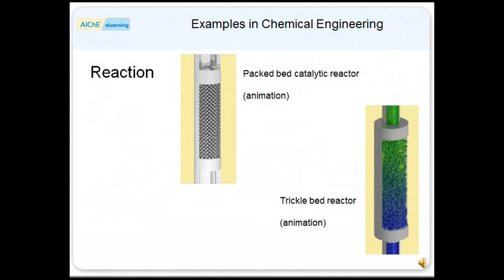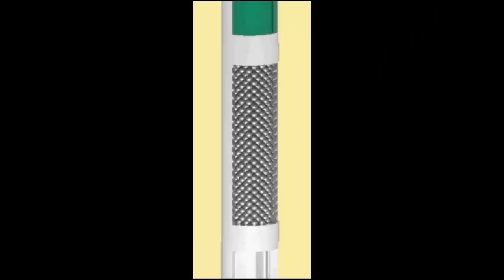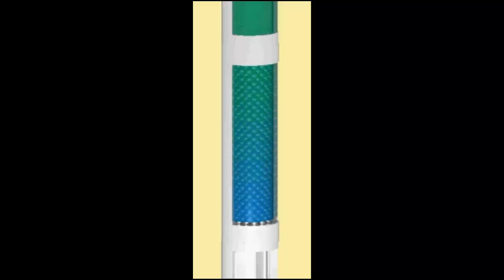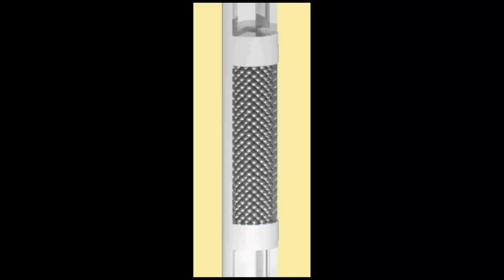Packed bed or fixed bed reactors have many applications in chemical engineering. In this case, the particles making up the bed are the catalyst for the reaction. Examples include the steam reforming of methane, where the catalyst is ceramic pellets impregnated with nickel.